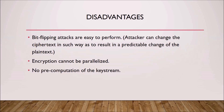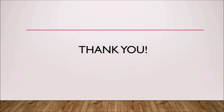Now the disadvantages. Bit flipping attacks are easy to perform — an attacker can change the cipher text in such a way as to result in a predictable change of the plain text. Encryption cannot be parallelized. There is no pre-computation of the keystream.